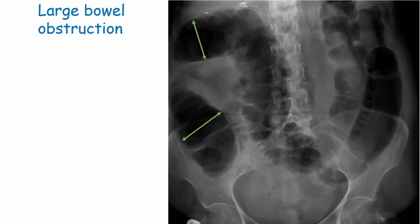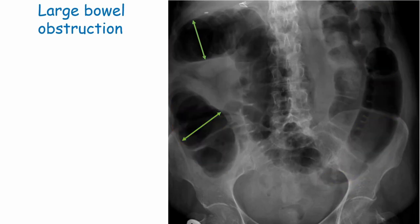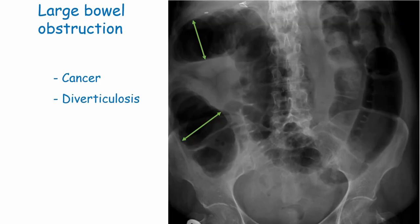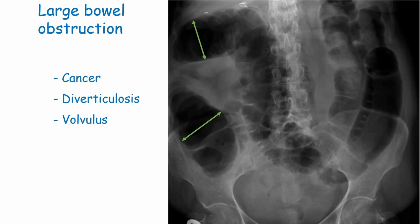Large bowel obstruction shows the ascending and descending colon on the periphery with haustra visible, and the bowel measuring over 6cm. Causes include cancer - either in the bowel itself or from another organ compressing it. Diverticulosis, outpouchings of the bowel mucosa usually linked to a low-fibre diet, is another cause. A volvulus occurs when part of the bowel twists on itself and its surrounding mesentery, similar to twisting a long balloon; in adults this generally occurs in the sigmoid colon or cecum. Hernias can also cause large bowel obstruction.